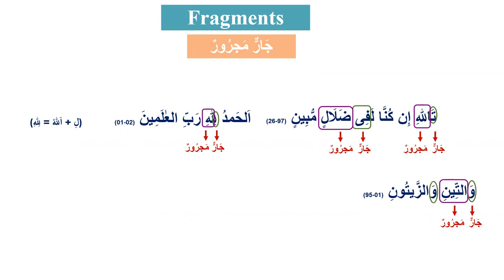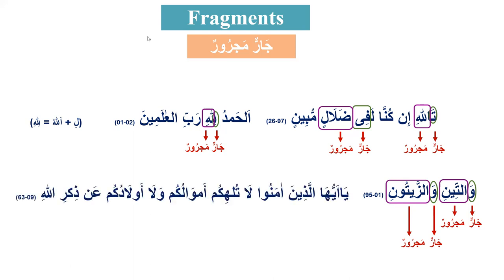But isn't zaitun in nasab or jar? It is only jar here, not rafa. If it were rafa it would be 'zaitunun.' Don't mix it with a plural like 'muslimoon' - zaitun is a singular word. Zaituna, zaituni - rafa, nasab, jar. It ends with that 'oon' sound but this is a different word - it is singular zaitun.